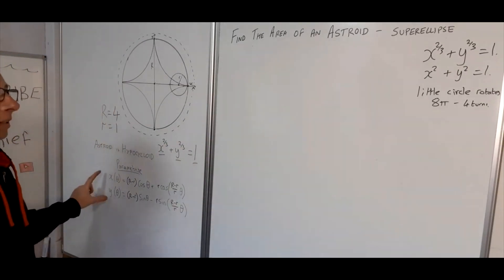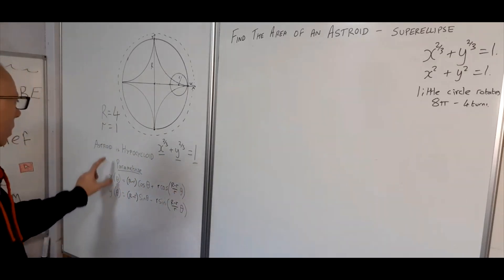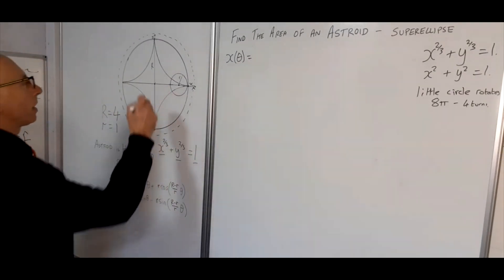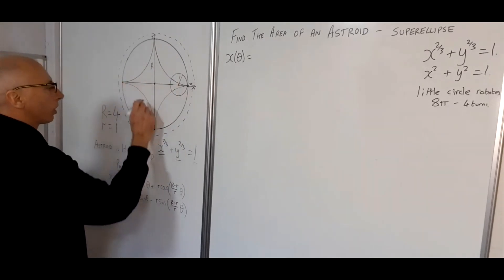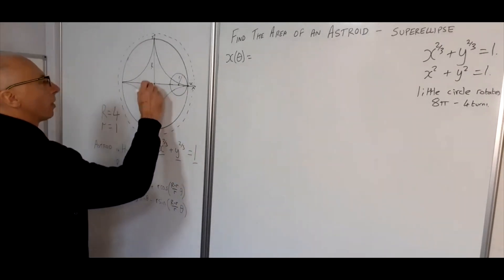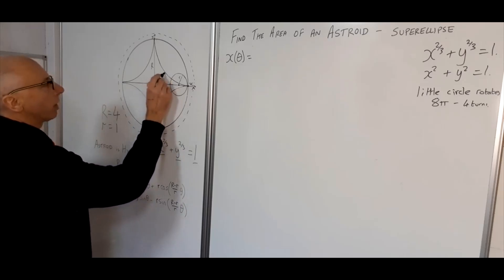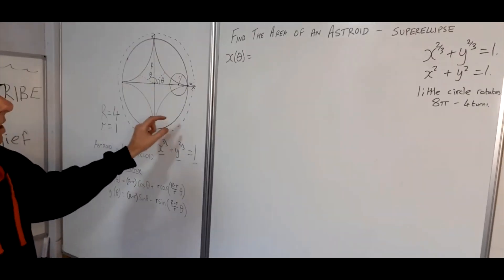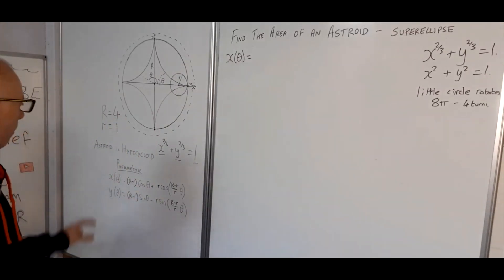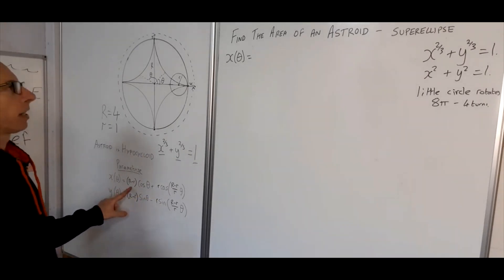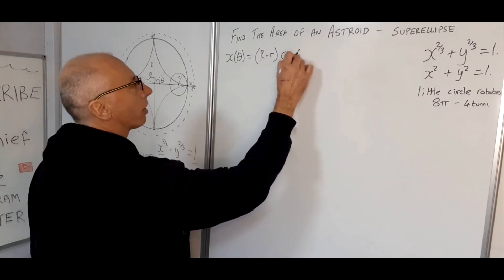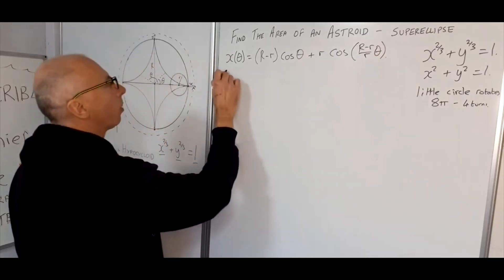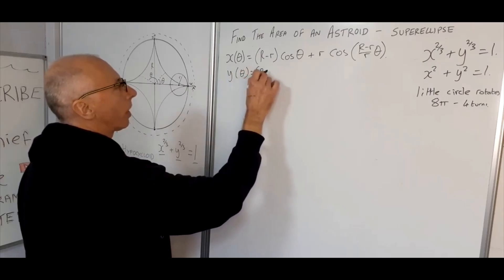Talking of parametrization, we need to work on the formula and calculate our parametric variable x(θ). The angle θ gives us the x and y coordinates needed to integrate. Our parametric formula is: x = (R − r)cosθ + r·cos((R − r)/r · θ), and y is very similar but uses sine, with a minus sine in the middle.